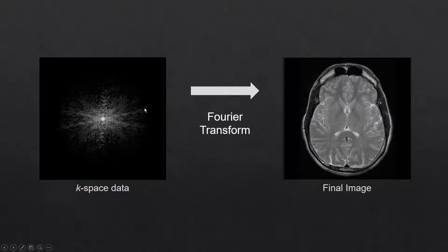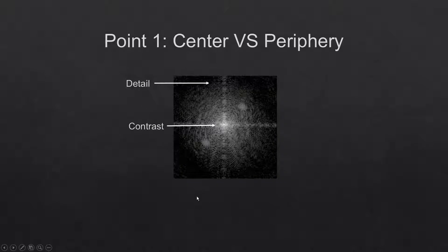The second point is that every point in k-space contributes to every pixel in the final image. The x- and y-axes in k-space represent spatial frequencies rather than position. High signal values tend to have low spatial frequencies, which means that the center of k-space gives contrast and brightness information, and conversely the periphery of k-space gives edge detail.